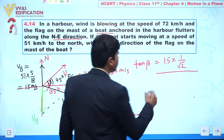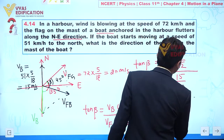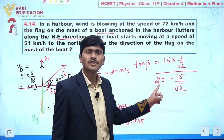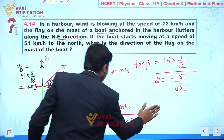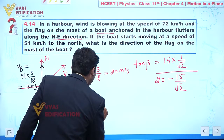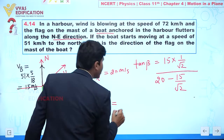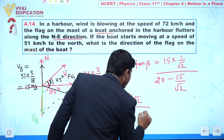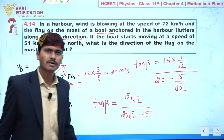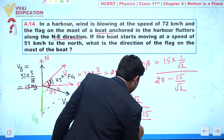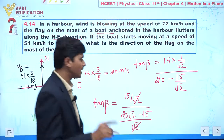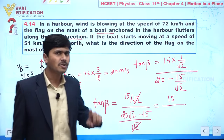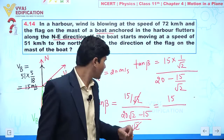So tan β = 15/√2 divided by (20 − 15/√2). Taking LCM of √2, the denominator becomes (20√2 − 15)/√2. The √2 cancels out, giving tan β = 15 / (20√2 − 15). With √2 ≈ 1.4, we have 20 × 1.4 = 28, so 28 − 15 = 13, giving approximately 15/13, which is around 1.